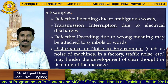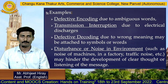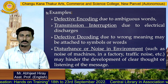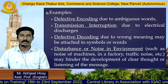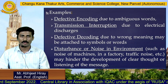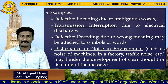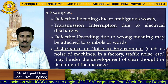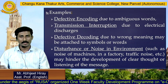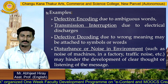Defective encoding due to ambiguous words means that if you use ambiguous words, the receiver will not be able to understand the meaning and will not interpret the message properly. Transmission interruption due to electrical discharges may hinder TV and other communication devices, which will ultimately interrupt or become an obstacle in the communication system.